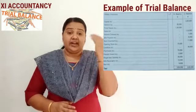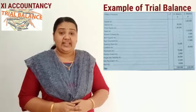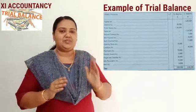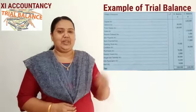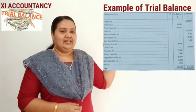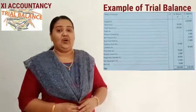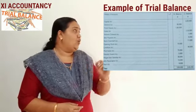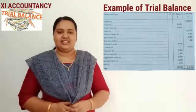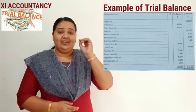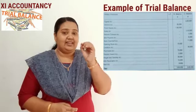In liabilities account, capital account, and revenue account, the credit side will be more than the debit side. In this example, the amounts of assets accounts and expenses accounts are written in the debit balance column — that is, debtors account, fixed assets account, stock account, purchases account, return inward account, wages account, salaries account, bills receivable account, and rent account balances are written in the debit balance column.